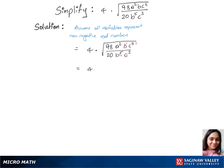Now we have 4 times square root of, we are left with 98a² and c² over 20b⁴.